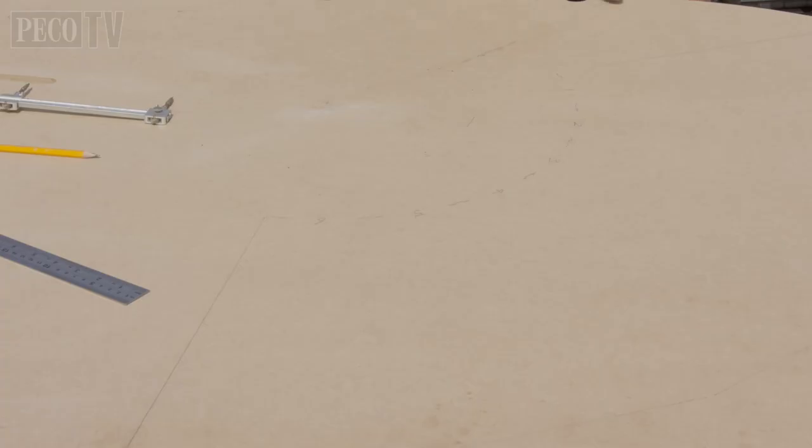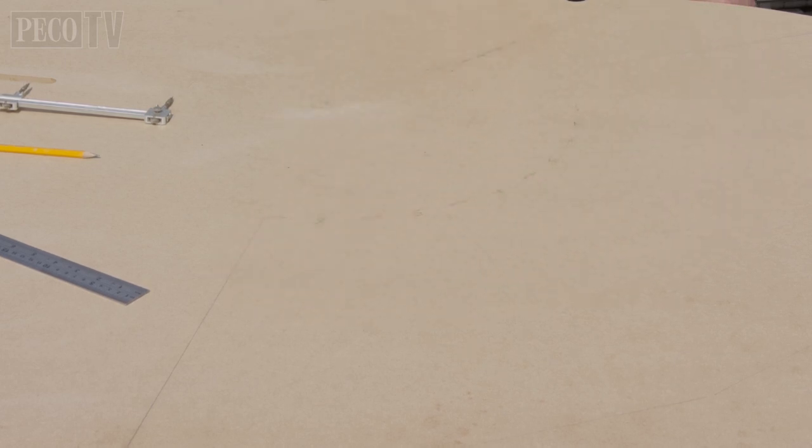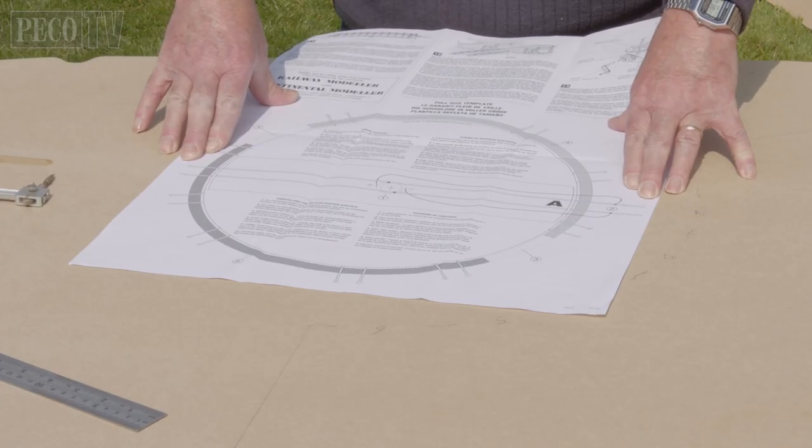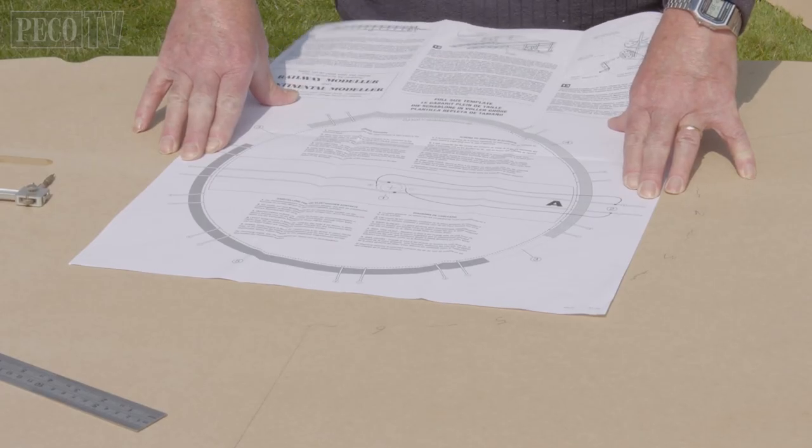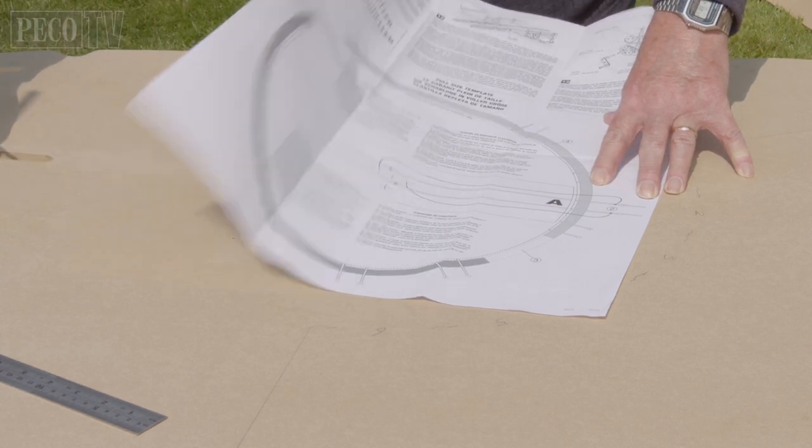In preparation before cutting the hole in your baseboard, you need to position it exactly where you want it. You need to work out where all your buildings are going to go and where your tracks are going to be laid. We have provided a full size template which can be used to assist in cutting the hole in your baseboard and to help with track laying.